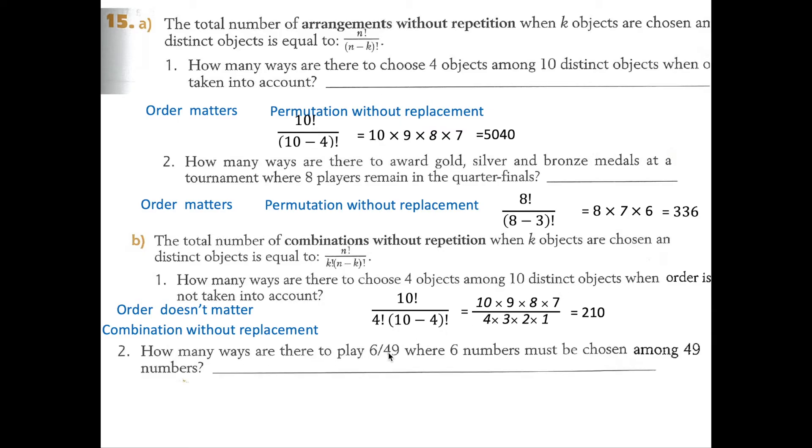Two. How many ways are there to play the 649, where 6 numbers must be chosen among 49 numbers? The catch with the 649 is the order isn't important, but once again, this is a combination.